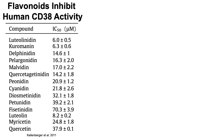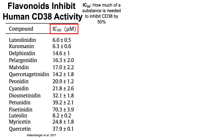The metric for human CD38 activity we're looking at is the IC50 — the half-maximal inhibitory concentration — which is how much of a substance is needed to inhibit CD38 by 50%. A lower concentration is better, because you need less of a substance to inhibit half of its activity. Higher values are worse.